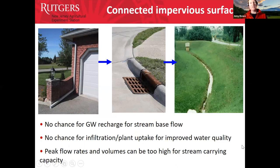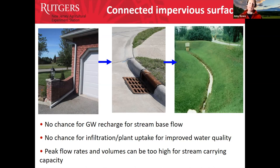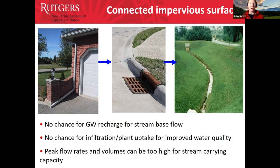Another problem is that impervious surfaces are often connected — a building downspout leading to an impervious roadway and then into the sewer system. These connected surfaces don't allow groundwater recharge, don't support stream base flow during dry conditions, and give no chance for plant uptake or soil infiltration. This also leads to very high flow rates and peak volumes that can cause scour and erosion in the receiving stream.